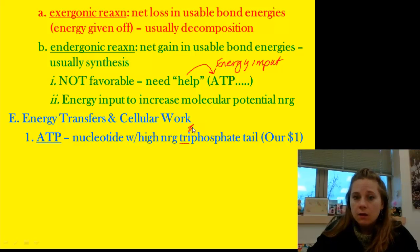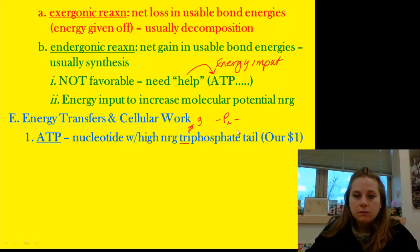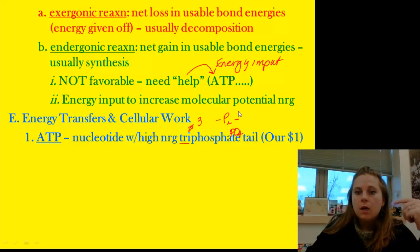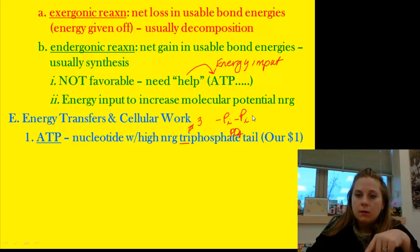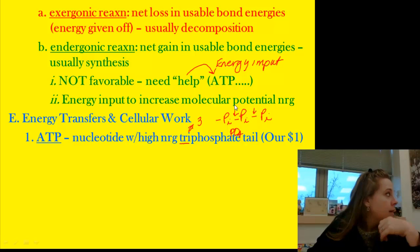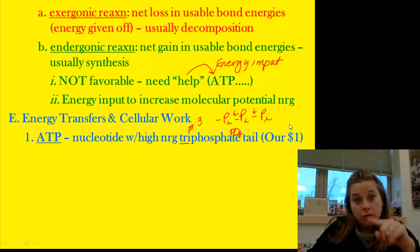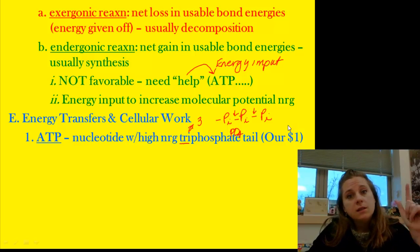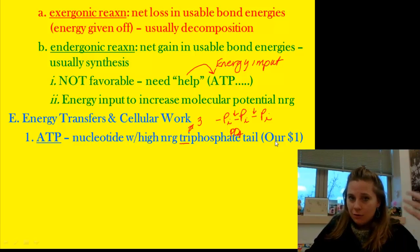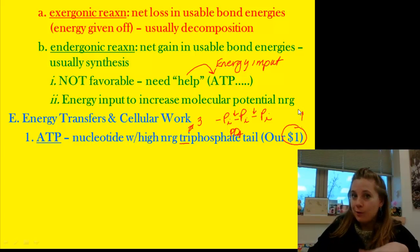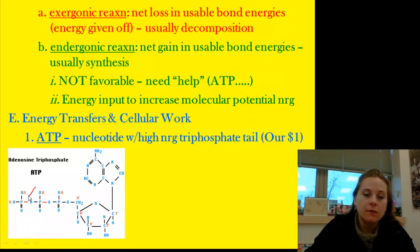'Tri' means three, so ATP has a three-phosphate tail — each phosphate group is PO₄. Each one of these bonds is very high energy, and they are what we call our dollar bills — our stored cash. They are our one-dollar bills, and I'll tell you that analogy story in class.